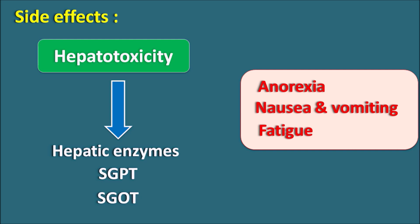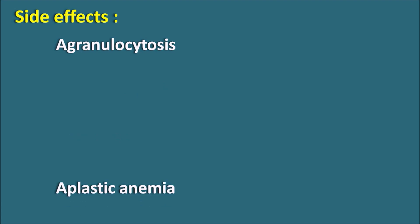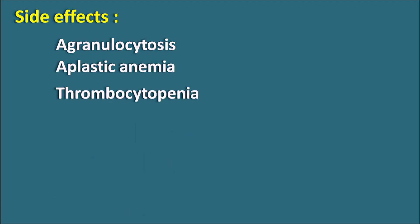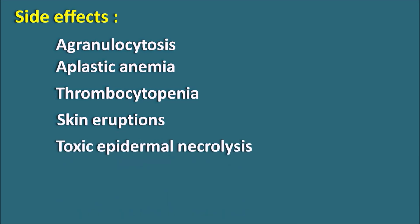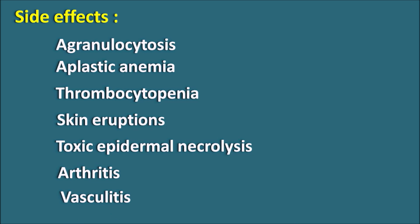Whenever isoniazid is given for a longer period, hepatic function should be checked thoroughly to assess any development of hepatic impairment. Isoniazid can also produce hematological changes like agranulocytosis, aplastic anemia, and thrombocytopenia — a decreased platelet count. It can also produce hypersensitive reactions like skin eruptions and toxic epidermal necrolysis, as well as inflammatory conditions like arthritis and vasculitis. Peripheral neuropathy and hepatotoxicity are the most important side effects to monitor.